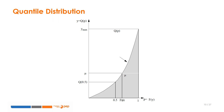The higher the quantile function, the higher the average income. The median of our cumulative density function, f equals 0.5, corresponds to an income of q(0.5).